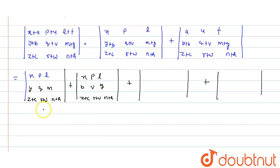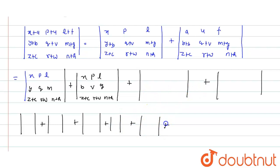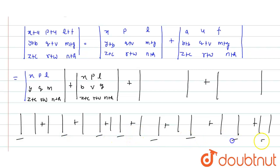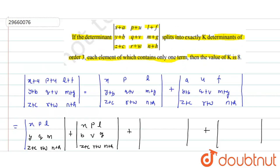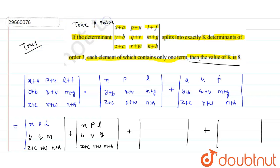So the total number of determinants found: 1, 2, 3, 4, 5, 6, 7, 8 — total 8 determinants. And at the end, each will have a single term. So the statement says: if the determinant splits into exactly k determinants of order 3, each element of which contains only one term, then the value of k is 8. This statement is true. Thank you, enjoy learning!